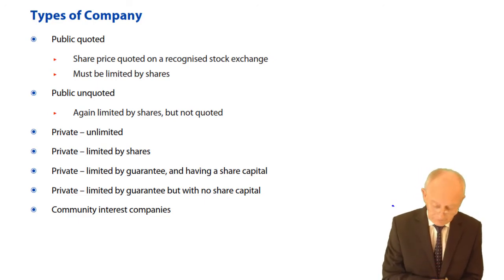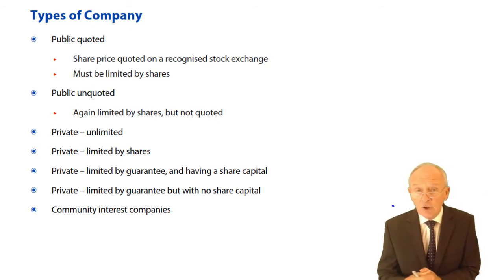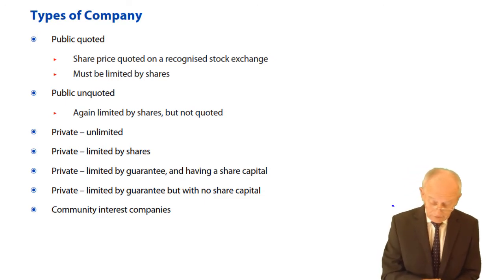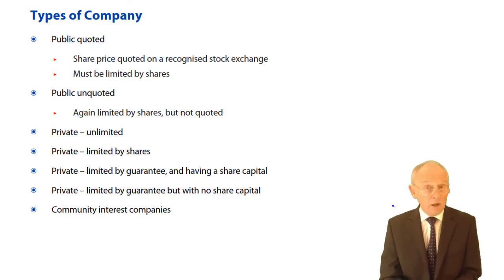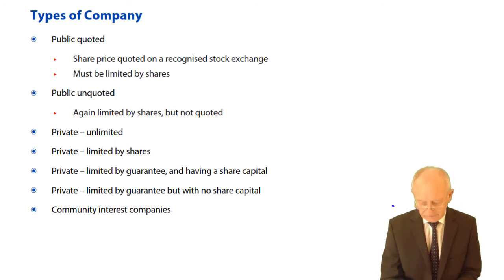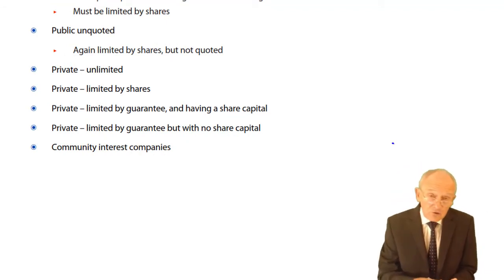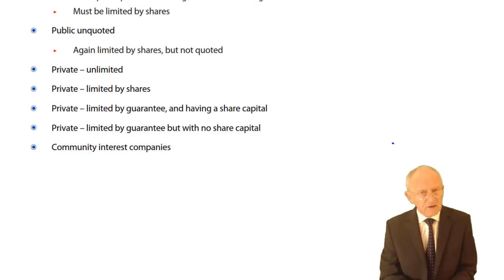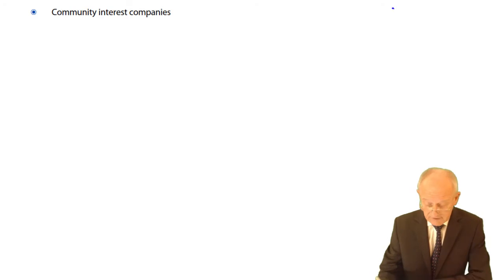Types of company: public quoted companies have their share price quoted on a recognised stock exchange and must be limited by shares. Public unquoted companies are again limited by shares but not quoted on a recognised stock exchange. Then we have the vast majority — private companies. First, we can have unlimited companies, which are a very rare beast. Then private limited companies limited by shares, private limited by guarantee with a share capital, and private limited by guarantee with no share capital. And then we have community interest companies.